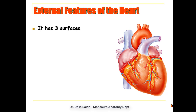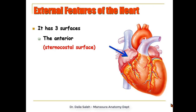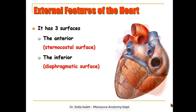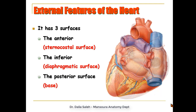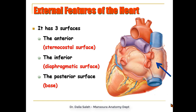The heart has three surfaces. The anterior or sternocostal surface shows the four chambers: the right atrium and right auricle, the left atrium and left auricle, the left ventricle, and the right ventricle. It also has an inferior or diaphragmatic surface, made mainly by the left ventricle and part of the right ventricle. Then there is a posterior surface or base, lying against the thoracic vertebrae, formed mainly by the left atrium and part of the right atrium.